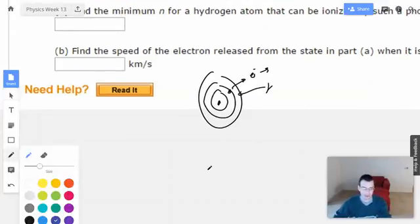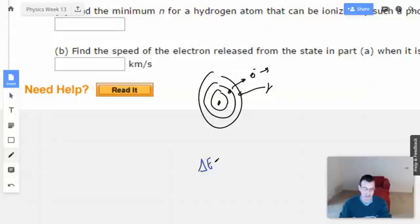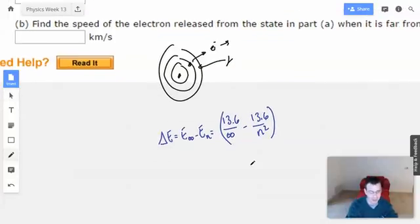So I'm going to take my blue and say that delta energy equals energy infinity minus energy of some level n, which will be 13.6 over infinity minus 13.6 over n squared. Okay, seems true, possibly.